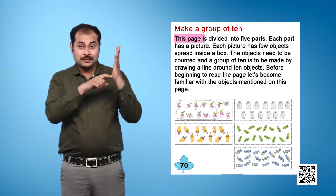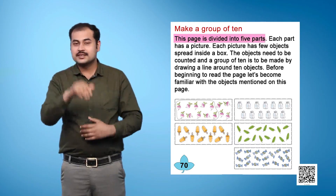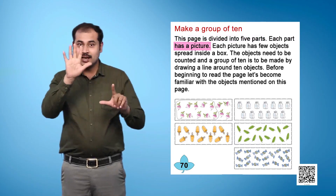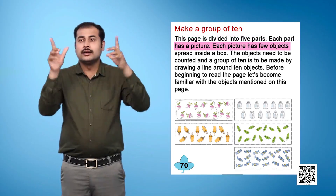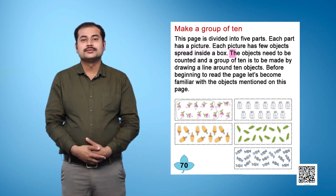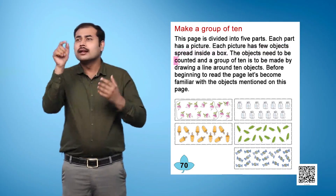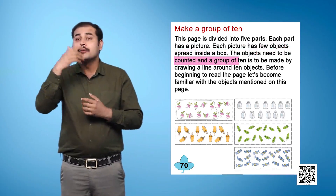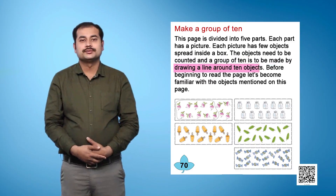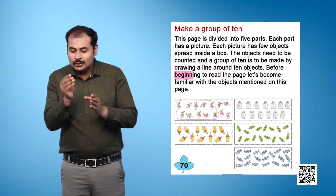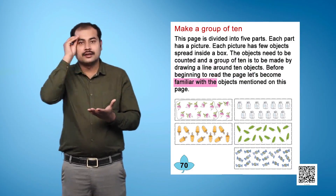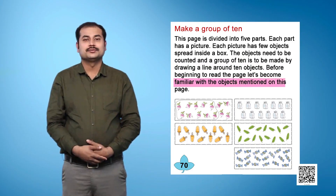This page is divided into five parts. Each part has a picture. Each picture has a few objects spread inside a box. The objects need to be counted and a group of 10 is to be made by drawing a line around 10 objects. Before beginning to read the page, let's become familiar with the objects mentioned on this page.